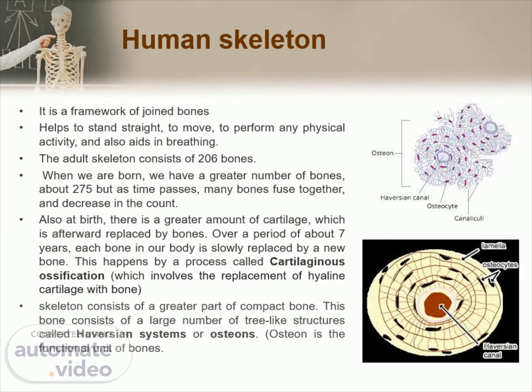Also at birth, there is a greater amount of cartilage, which is afterward replaced by bones. Over a period of about 7 years, each bone in our body is slowly replaced by a new bone. This happens by a process called cartilaginous ossification, which involves the replacement of hyaline cartilage with bone. The skeleton consists of a greater part of compact bone, which includes large numbers of tree-like structures called Haversian systems or osteons. The osteon is the functional unit of bone.